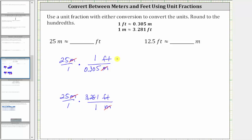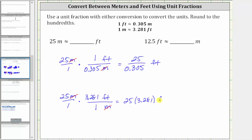Using the first conversion, where one foot is approximately 0.305 meters, the unit fraction would be one foot over 0.305 meters. Using the second conversion, where one meter is approximately 3.281 feet, the unit fraction would be 3.281 feet over one meter. So for the first product we have 25 divided by 0.305 feet, and in the second product, because the denominator is one, we just have 25 times 3.281 feet.